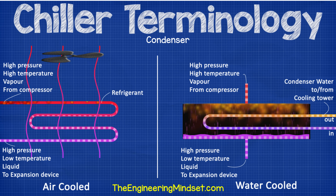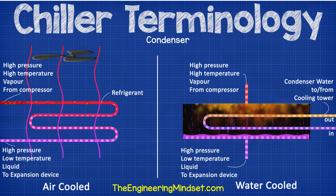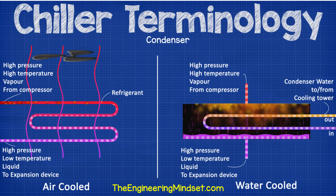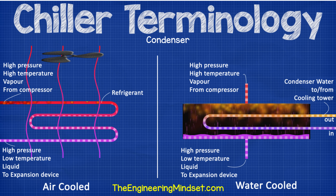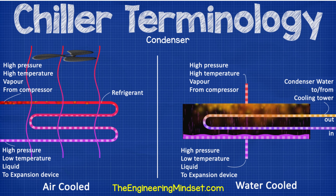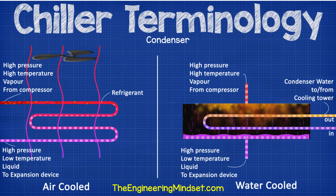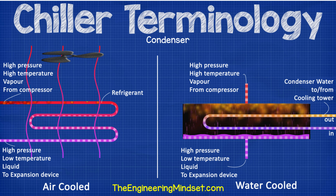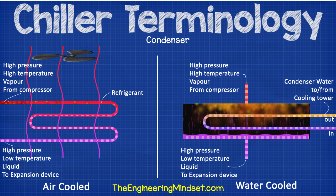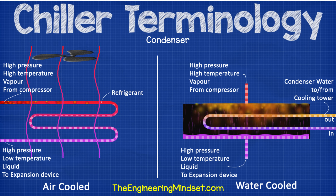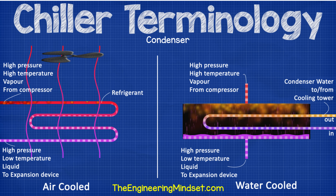Condenser. This is where the unwanted heat of the building is rejected to the atmosphere, either through an air-cooled or water-cooled condenser. The refrigerant, which carries the unwanted heat from the evaporator over to the condenser, will enter as a high-pressure, high-temperature gas, and as the thermal energy is rejected, it will leave as a high-pressure liquid.